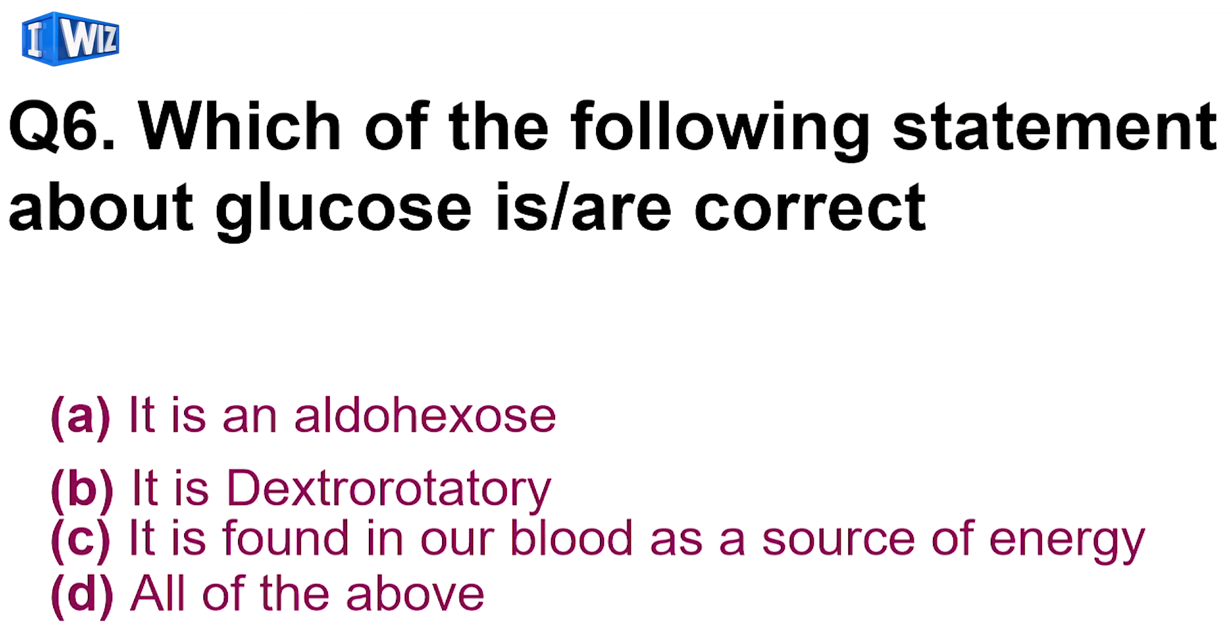Next question is, which of the following statements about glucose is or are correct? First statement says that it is an aldohexose - absolutely, it is an aldehyde with six carbons. It is dextrorotatory, that is, it rotates the plane polarized light towards the right. Third option says it is found in our blood as a source of energy, which is also correct. So D is the correct option, all statements are correct.